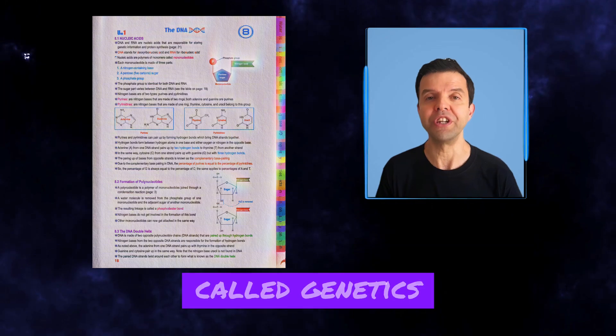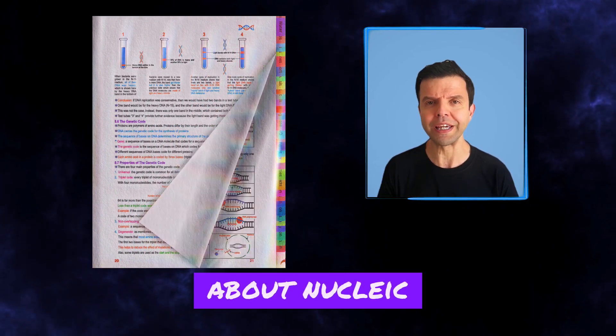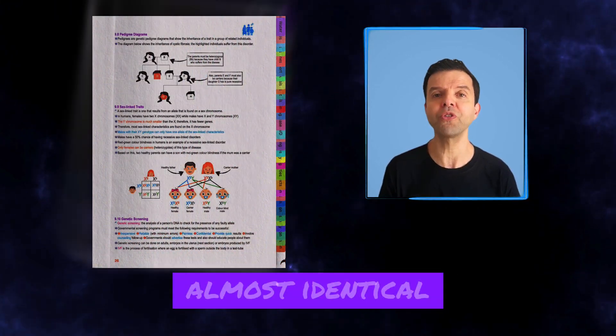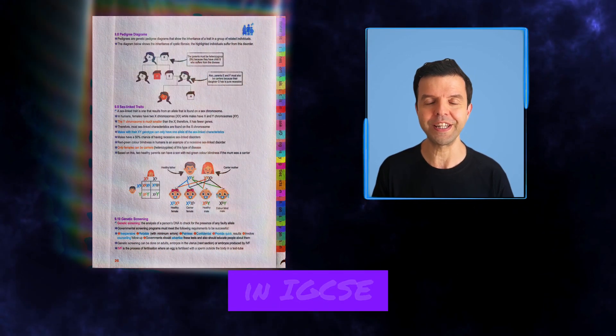The second block is called Genetics. It talks about nucleic acids like DNA and RNA, protein synthesis and inheritance, which is almost identical to what you studied in IGCSE.